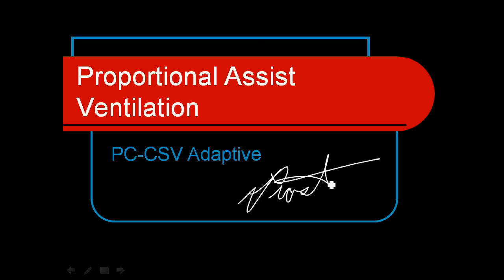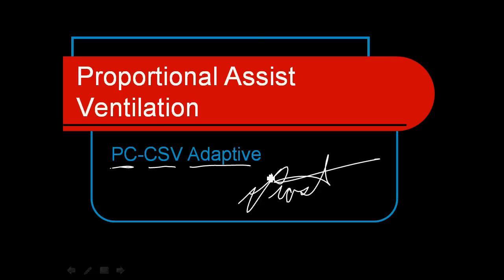Hi everyone, it's Alan Prost again, and now I'm talking about proportional assist ventilation in part of Module 4 and the RESP220 course. This is a pressure control mode that allows continuous spontaneous ventilation, and it's adaptive to the patient's needs. It's another one of our advanced modes that's still a little bit experimental, but we do have mechanical ventilators with this mode available to us, and we're learning how to use it clinically in the hospitals.